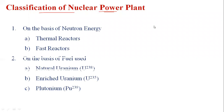Today I am discussing the classification of nuclear power plants, that means the various types of nuclear reactors used in nuclear power plants. It is classified based on five parameters: basis of neutron energy, basis of fuel used, based on moderator used, based on coolant used, and the last one is the type of core used.